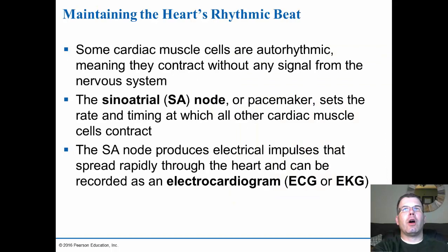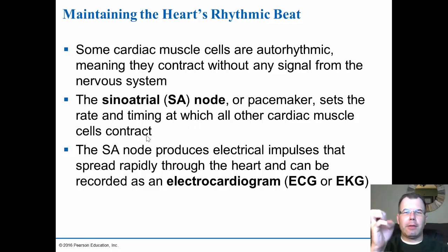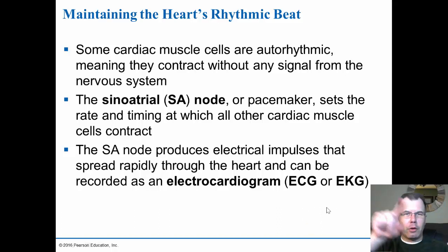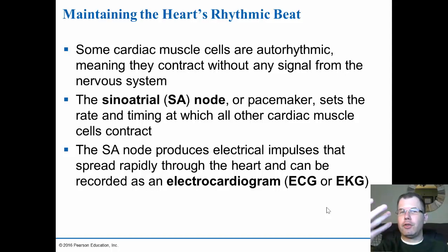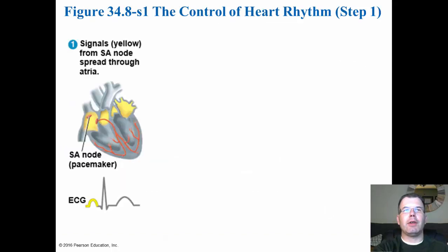Some cardiac muscle cells are autorhythmic — they can contract without any signal from the nervous system. But most of the cells are controlled by the sinoatrial node, which is the pacemaker that sets the rate and timing of all cardiac muscle cells. The SA node produces electrical impulses that spread rapidly through the heart and can be recorded as an electrocardiogram or ECG or EKG. That's the QRS wave. If there are any issues with the heart they look at the EKG to make sure everything is okay.